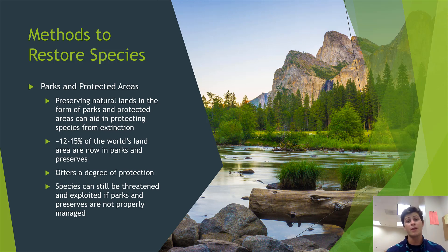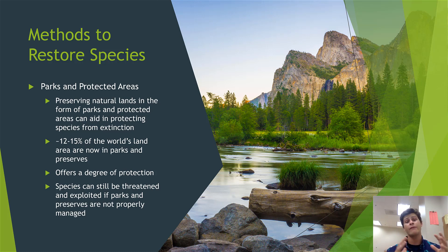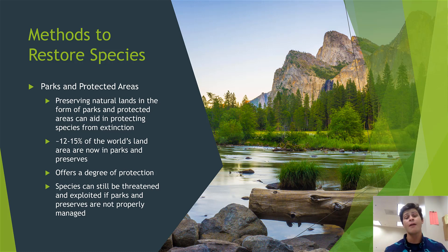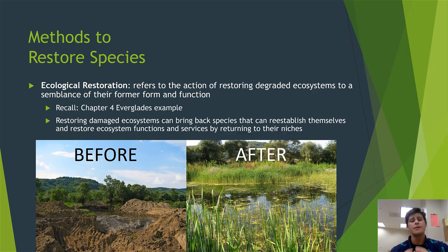However, there is a caveat. Species can still be threatened and exploited via over-harvesting if parks and preserves are not properly managed. This is a prolific problem in Africa, where many species are subjected to over-harvesting and poaching, and it is very difficult to fight off poachers and keep species numbers in check. While parks and protected areas are a good measure in terms of preserving habitat, they are not enough if habitat loss isn't the only thing driving species numbers down.